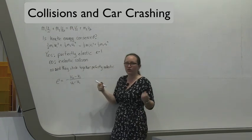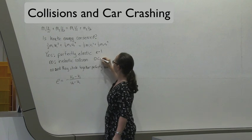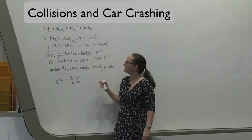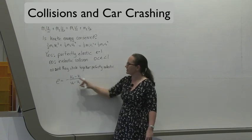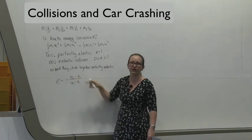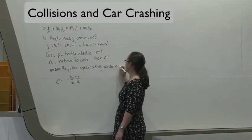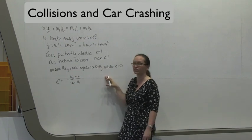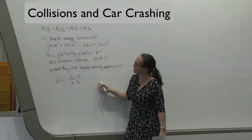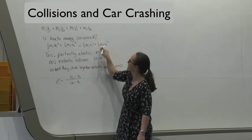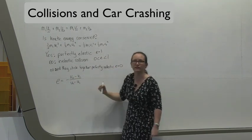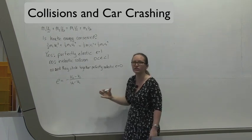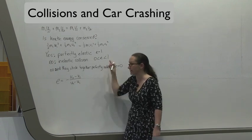If the coefficient of restitution is somewhere between zero and one, it's going to be an inelastic collision. In the case where the two bodies stick together, the difference between their final velocities is zero, so E is going to equal zero for a perfectly inelastic collision. At the start of the lab you'll be deriving this, combining these two equations to show this relationship. You may want to have a try before coming to the lab and ask your demonstrator if there's something you don't understand.